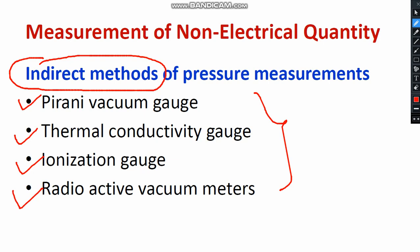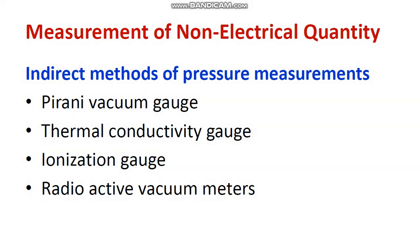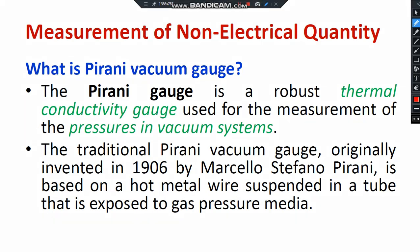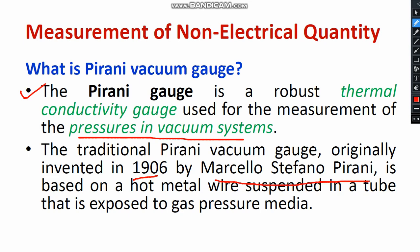These are the popular methods of indirect pressure measurement. In this video, I am going to discuss how the Pirani vacuum gauge operates and its major working principles. The Pirani gauge is a robust thermal conductivity gauge used for the measurement of pressure in vacuum systems. In the year 1906, Marcelo Stefano Pirani developed the basic model of the Pirani vacuum gauge. Thereafter, many improvements were made to this vacuum gauge.